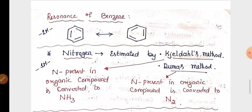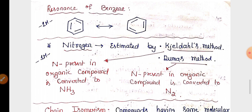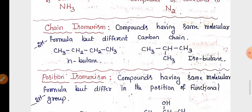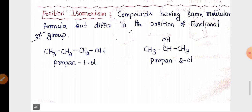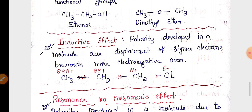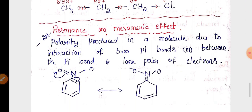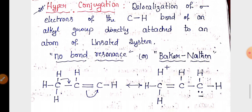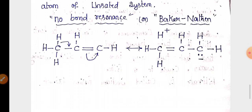For estimation of nitrogen, there are two methods: Kjeldahl's method and Dumas method. In Kjeldahl's method, nitrogen is converted to ammonia; in Dumas method, it is converted to nitrogen gas. Questions from isomerism include chain isomerism with example, position isomerism with example, and functional isomerism — any one of these is very important. For bond effects, either inductive effect, resonance or mesomeric effect, electromeric effect, or hyperconjugation — one or two compulsory questions will appear.